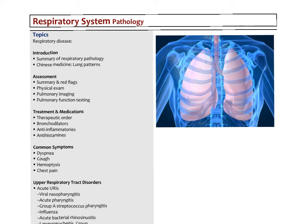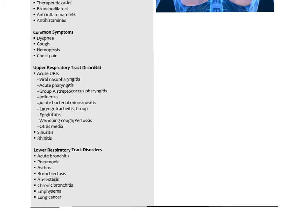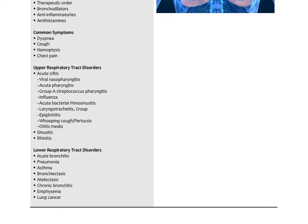In this final video on lower respiratory system pathology, we're going to look at chronic obstructive pulmonary disease — that would be emphysema and chronic bronchitis. We'll also look at atelectasis, bronchiectasis, and lung cancer.